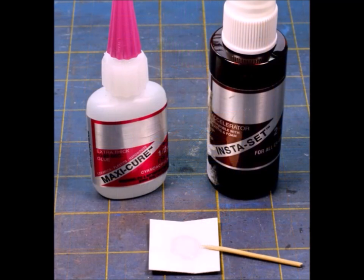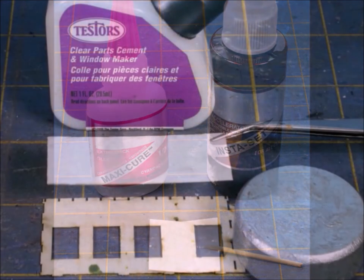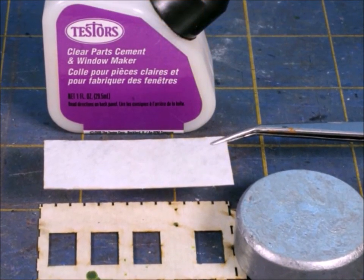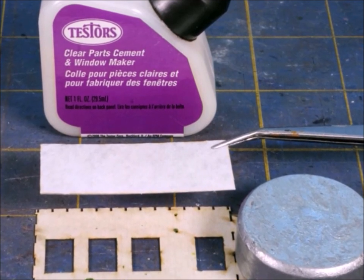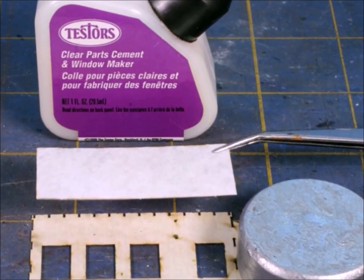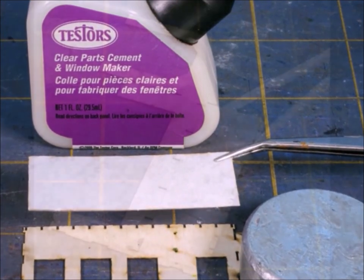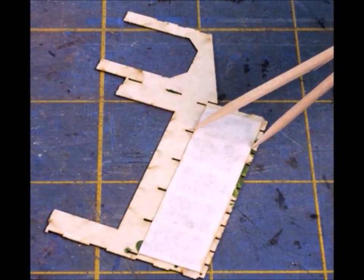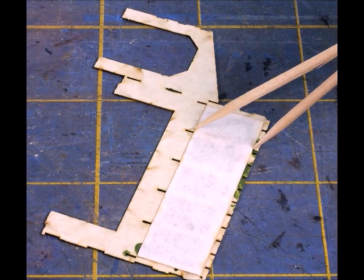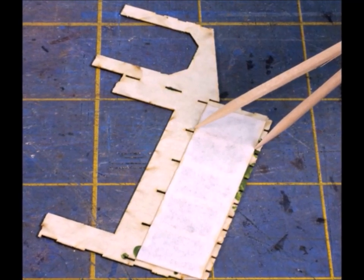I have some runny stuff and I have some thick stuff, but I always have the instant set. Now I also have this clear parts cement for anything to do with windows and stuff like that. A number of different companies put this product out, it really makes a world of difference.